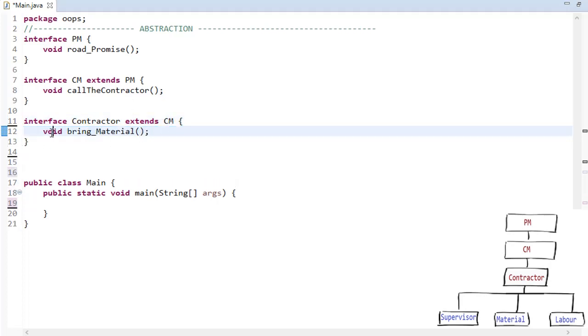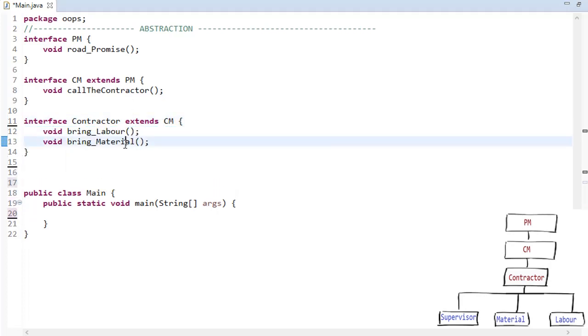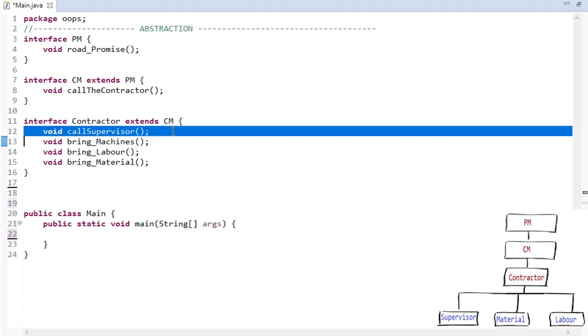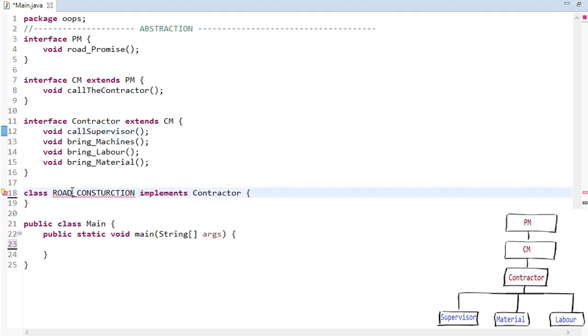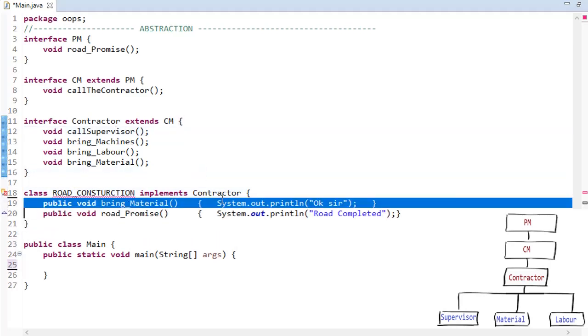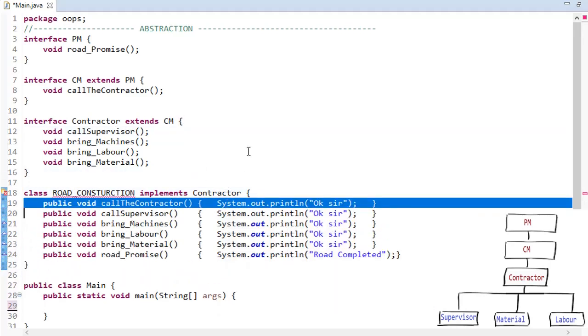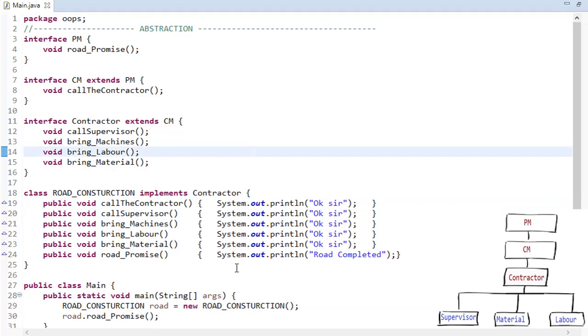What is the contractor's job? It is to provide the materials, the labor, the machines. Then the road construction starts, and then the implementation happens. In the end, what happens is the road gets constructed.